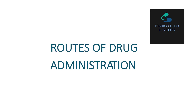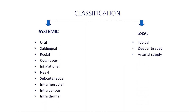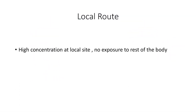We are into the topic of routes of drug administrations. Till now, we have seen the classifications of different routes and the systemic routes. In different parts, we covered different systemic routes, and last we concluded was the parenteral routes. Now, we will be heading to local routes of drug administrations, which are divided into three parts. So let's continue with the local route.